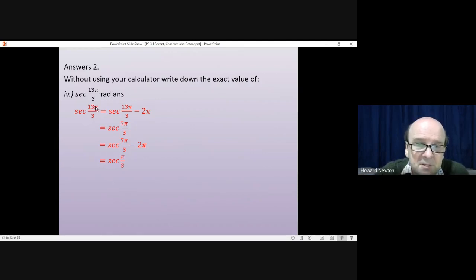So the sec of 13 pi by 3, I've taken away 360 degrees twice. That takes me down to the same thing, the sec of pi by 3. At this point, I think I would say that sec is 1 over, oh, it's the sec of 60 degrees. And then sec is 1 over cosine, so it's 1 over the cosine of 60 degrees.